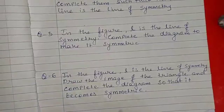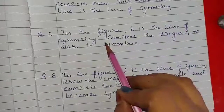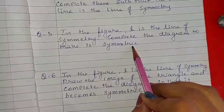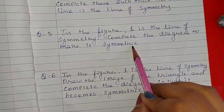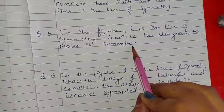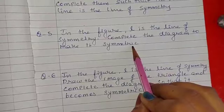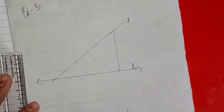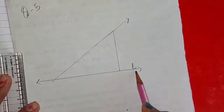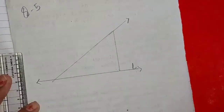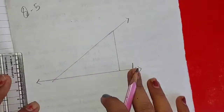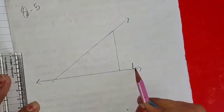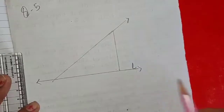Question number 5. In the figure, L is the line of symmetry. Complete the diagram to make it symmetric. Here the figure is given, and the L line of symmetry is also given. We have to complete the diagram. This is a plain page. We will draw this figure on a plain page and complete it. L is the line of symmetry.